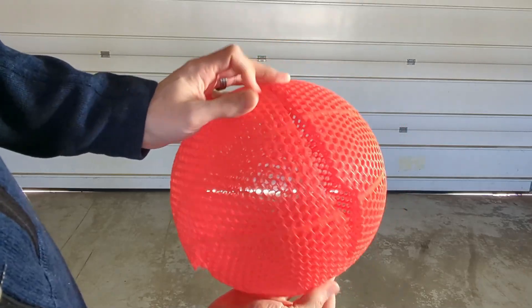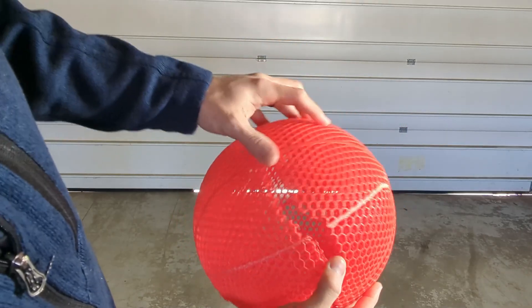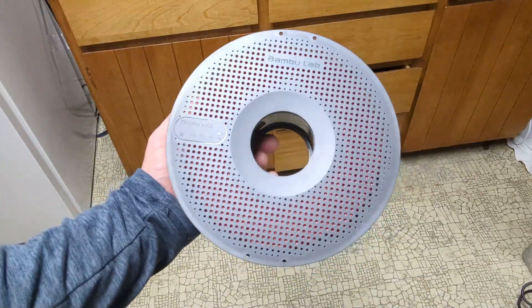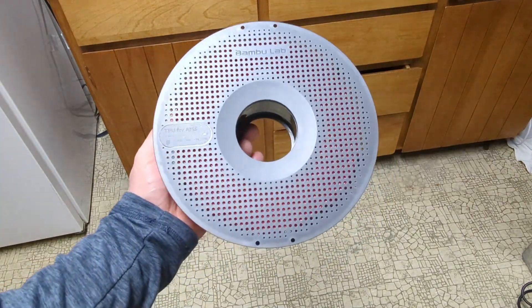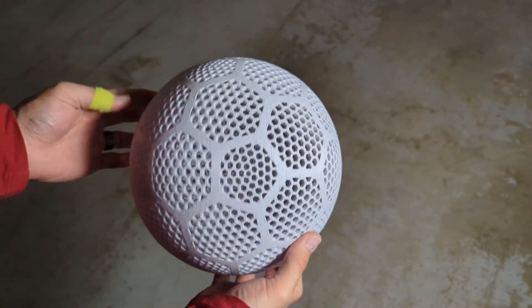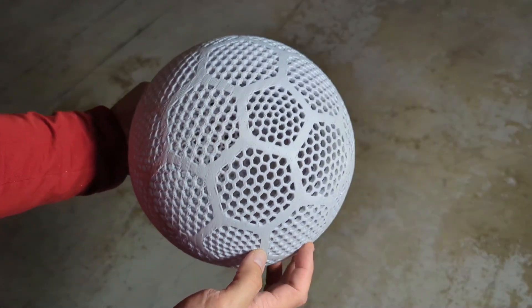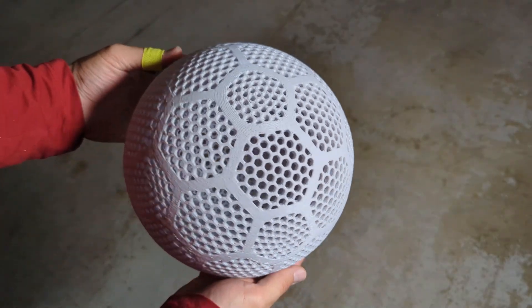I do have a little bit of this TPU left over and I was thinking about different options that it would possibly work well for. And the first thing that I thought of is that it might actually work well as a good single lattice airless soccer ball. The problem that I've had with these different filaments for airless soccer balls